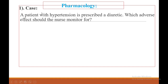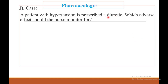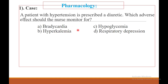Question one — pharmacology. A patient with hypertension is prescribed a diuretic. Which adverse effect should the nurse monitor for? The choices are: A. Bradycardia, B. Hyperkalemia, C. Hypoglycemia, D. Respiratory depression.